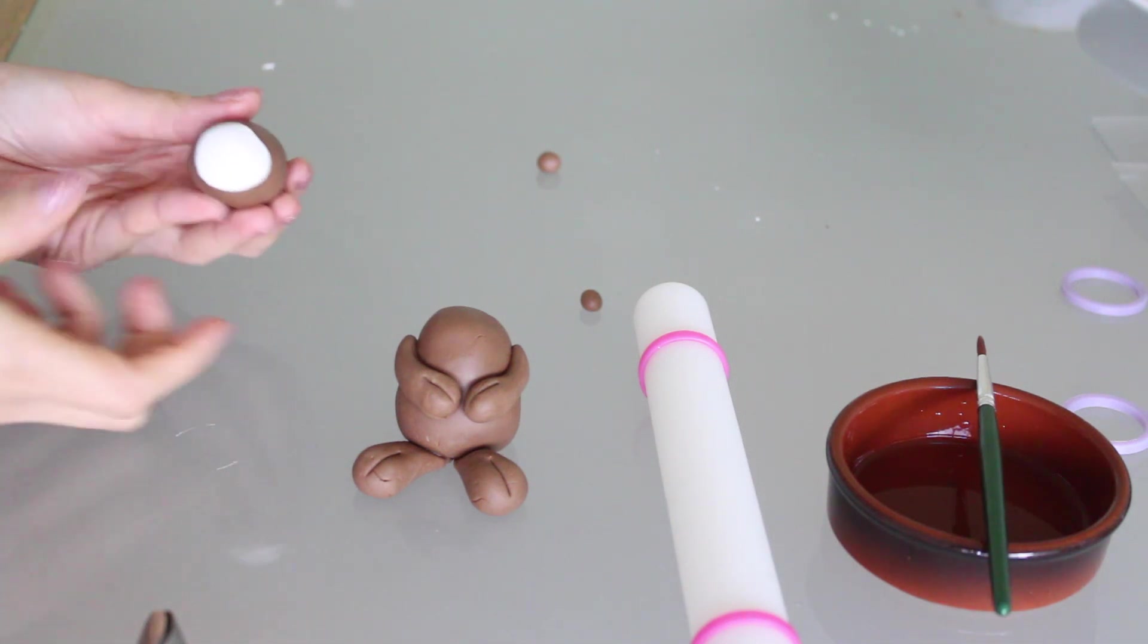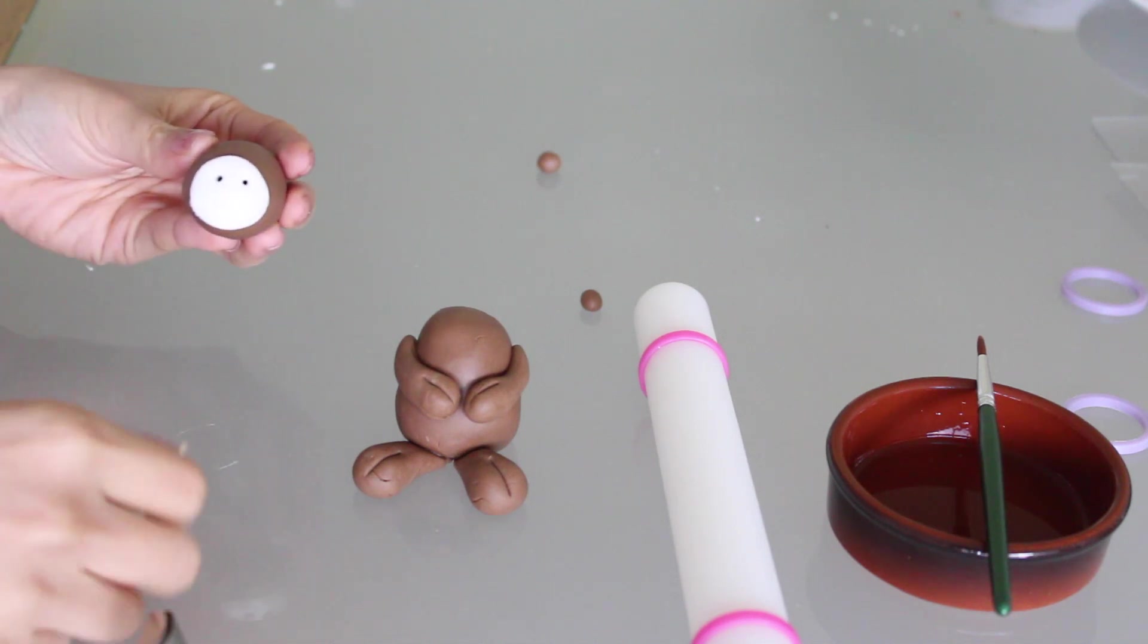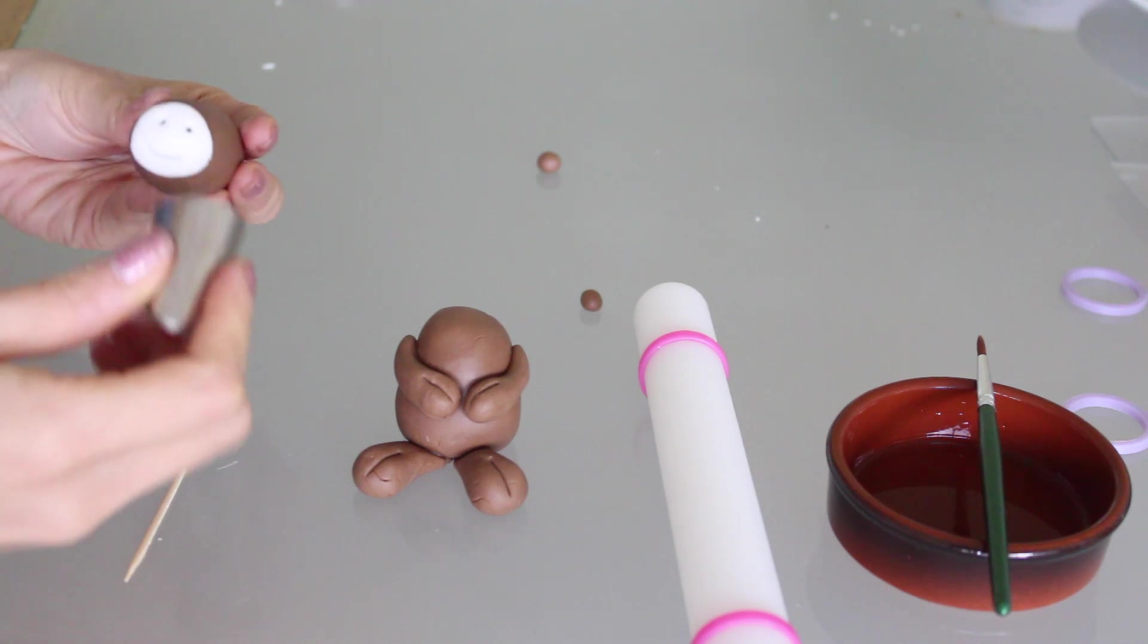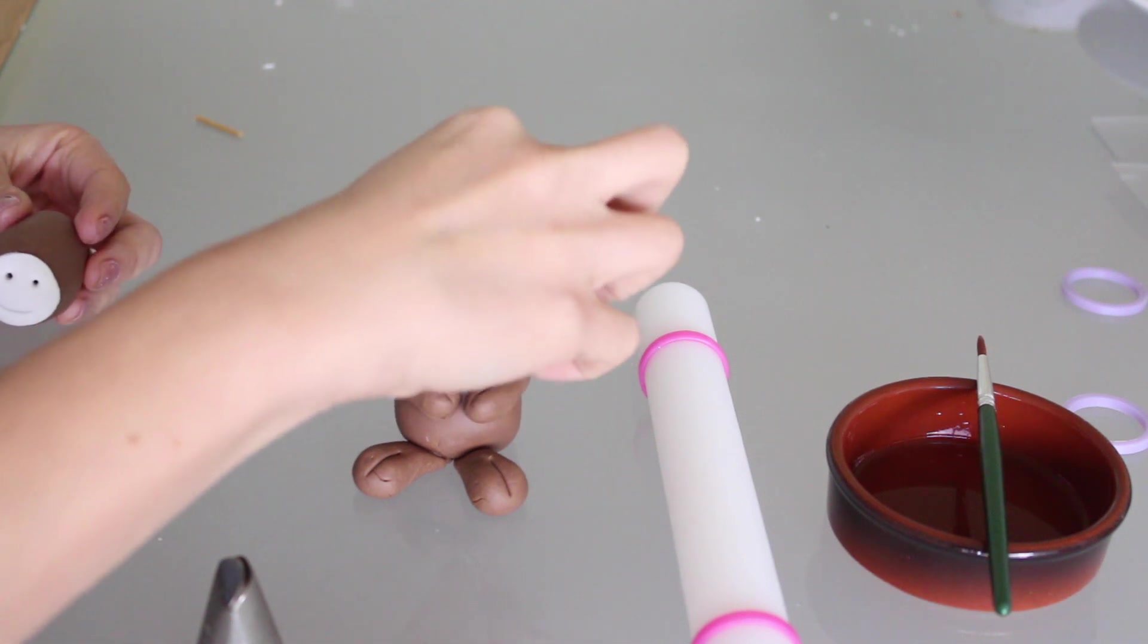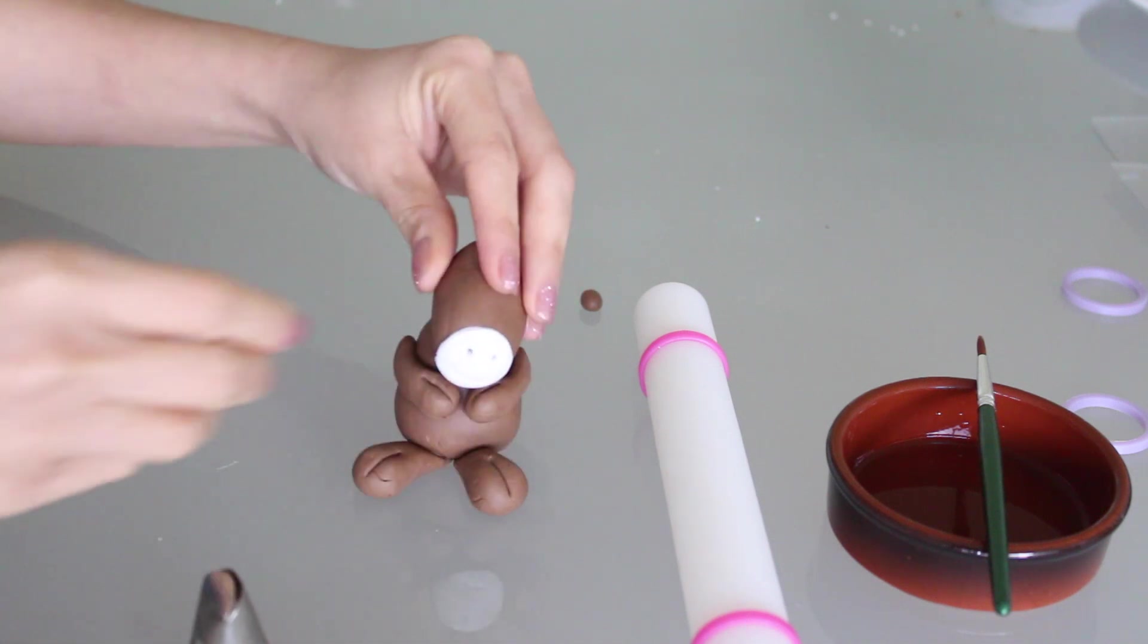Use a toothpick to create the nostrils of the horse. Then use a piping tip to create the impression of a smile. To secure the head to the body, insert a toothpick into the body of the horse, and then place the head over.